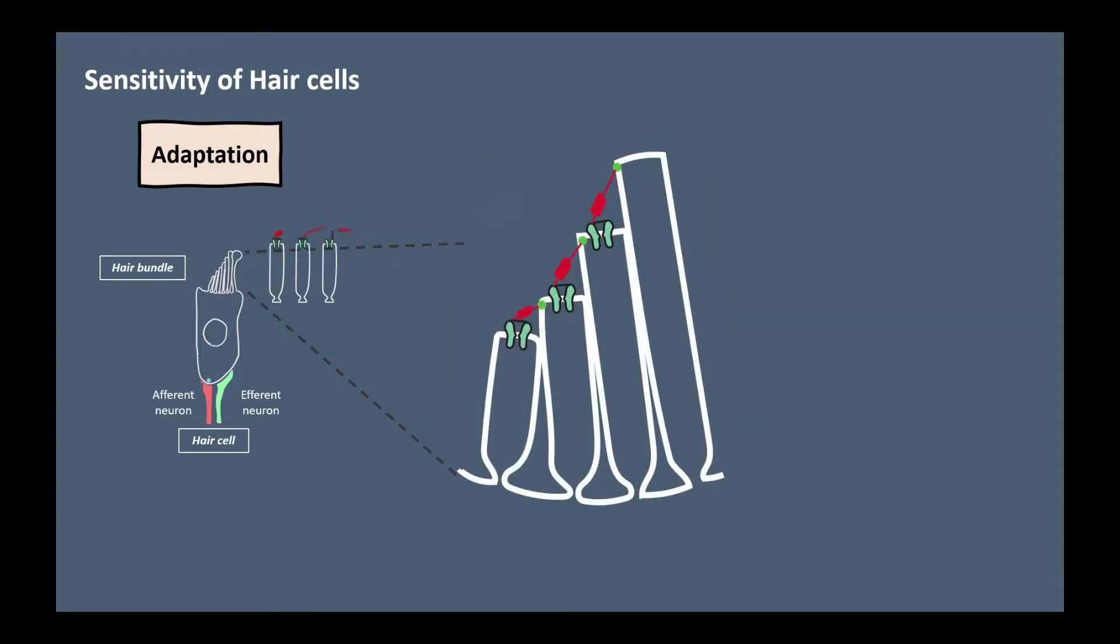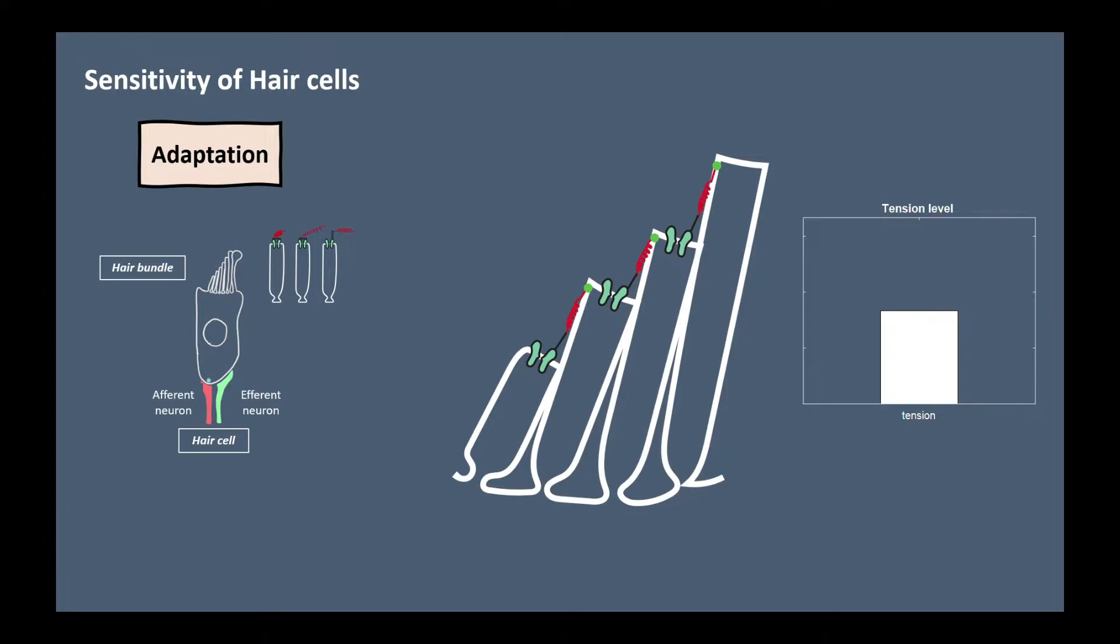Here we need to consider the myosin that the gating spring is connected to. Before the gating spring opens the ion channel, let's say the tension of the spring is this level. But when the hair bundle is deflected, the tension level will increase and open the ion channel. Here comes the adaptation process. When the spring reaches the resting tension, which is the highest tension level, the position of the myosin changes and the tension of the spring is recovered. According to the recovery of tension, the ion channel closes and the calcium influx reduces to its original level. In this way the balance between the myosin position changes and the gating spring tension is achieved.